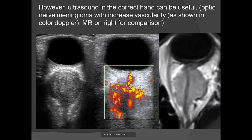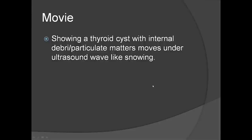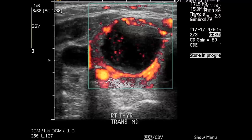Ultrasound is not used as much nowadays in the United States, but in the right hands it can be very useful. You can see the eyeball and a lesion beyond it; with color Doppler you can see blood flow. This correlates with MRI — here showing a meningioma surrounding the optic nerve. I'll show you a thyroid cyst with debris floating inside, moved by the ultrasound wave. Importantly, ultrasound does deposit some energy into whatever it images and can move small particles inside the eyeball.